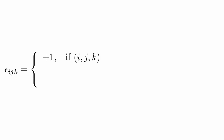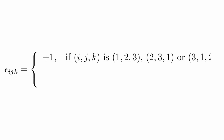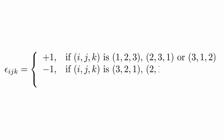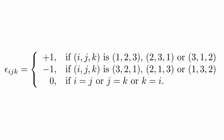The Levi-Civita symbol is defined as epsilon sub ijk equals one if ijk is one of the cyclic permutations (1,2,3), (2,3,1), or (3,1,2); equals negative one for all cyclic permutations of (3,2,1), which are (3,2,1), (2,1,3), and (1,3,2); and is equal to zero otherwise, meaning at least one of the indices repeats.